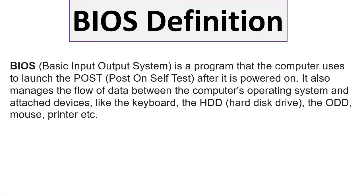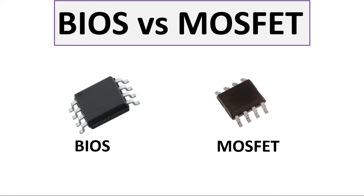So the BIOS definition: BIOS, basic input output system, is a program that the computer uses to launch the POST or power on self test after it is powered on. It also manages the flow of data between the computer's operating system and attached devices like the keyboard, HDD or hard disk drive, the ODD or optical disk drive, etc.